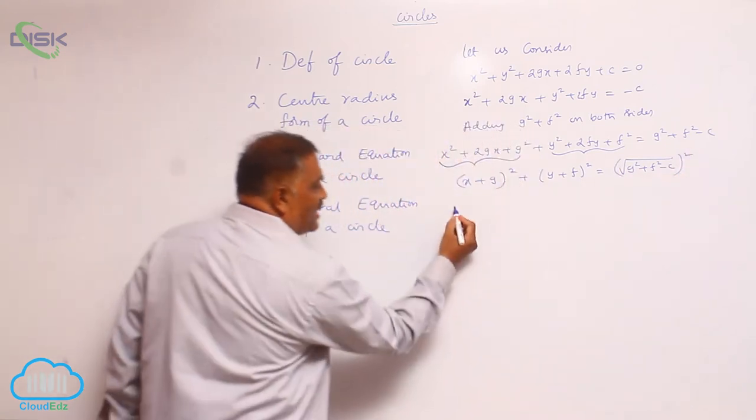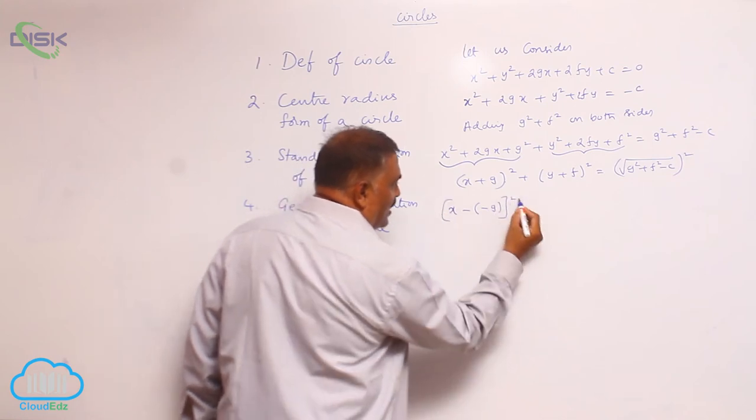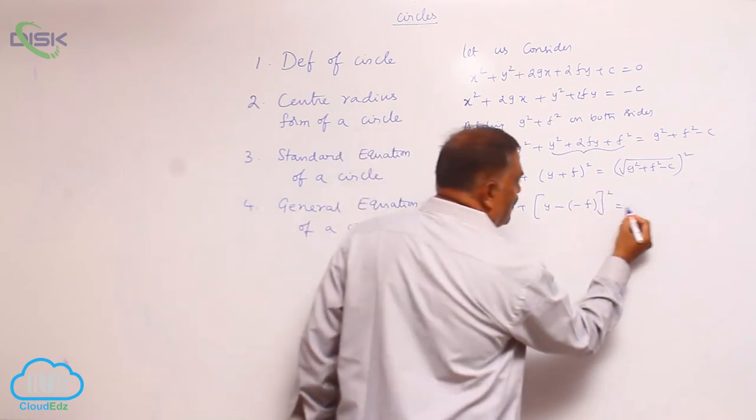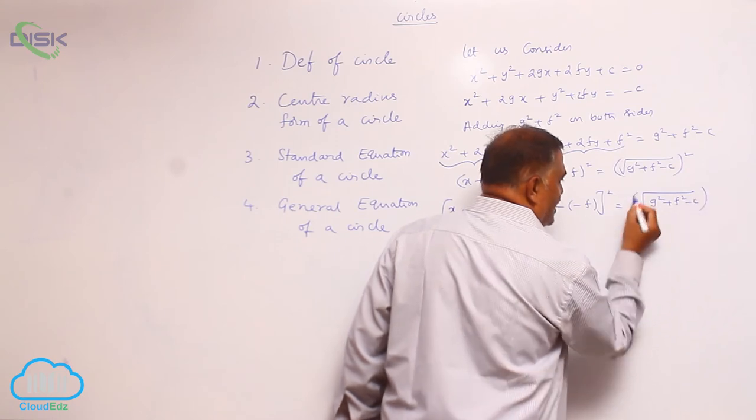So, again it is written as x minus half minus g whole square plus y minus half minus f whole square is equal to root of g square plus f square minus c whole square.